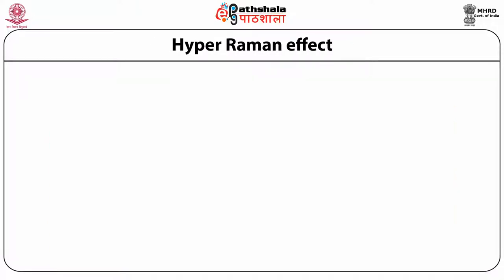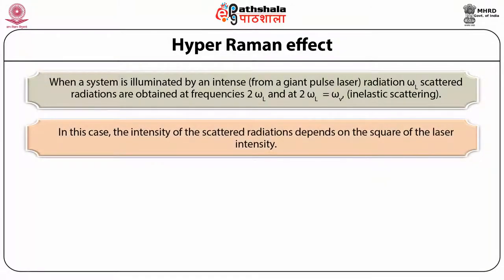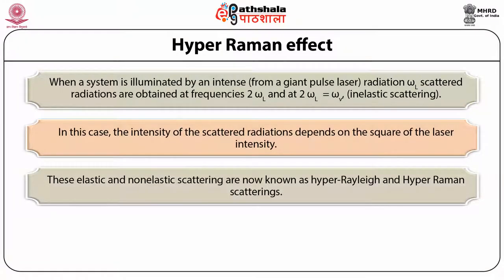Coming to hyper Raman effect: when a system is illuminated by an intense radiation from a giant pulse laser, say ruby laser or Nd:YAG laser, at frequency omega_L, scattered radiations are obtained at frequencies 2*omega_L and 2*omega_L ± omega_nu, which is inelastic scattering. The intensity of scattered radiations depends on the square of the laser intensity. These elastic and inelastic scatterings are known as hyper Rayleigh and hyper Raman scatterings.